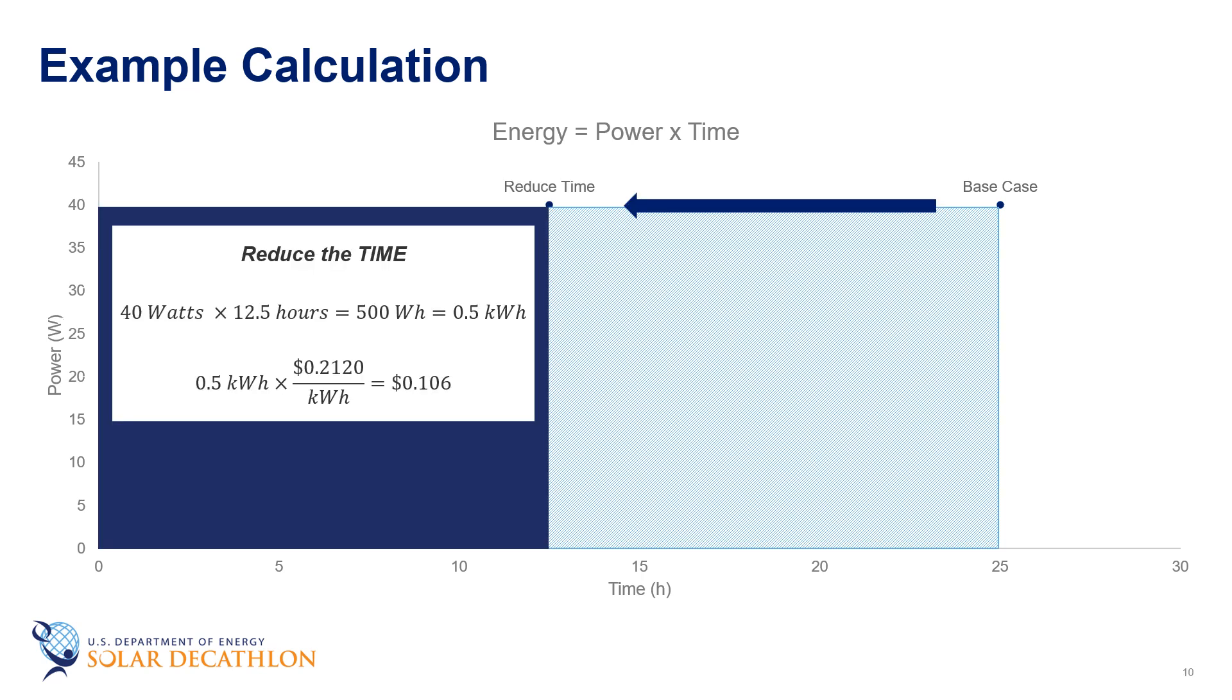The first way to save energy is to reduce the amount of time that the light bulb is turned on. So let's say we turn off the light bulb for half the day and now our 40 watt light bulb is running for half the time it was running in our base case scenario or 12 and a half hours. Doing the math gives us 0.5 kilowatt hours, which has a cost of 10.6 cents.